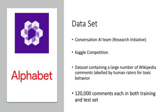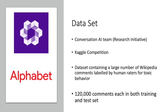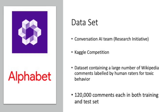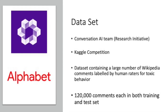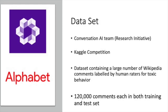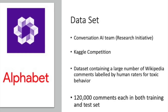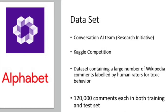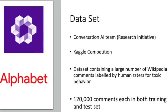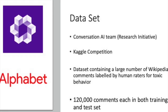For my dataset, I took data from a Kaggle competition which tried to do this prediction — predicting toxic comments from data. This was from the Conversation AI team, a research initiative with Alphabet companies like Google and Jigsaw. The dataset they created was around 120,000 comments in both a training and a test set, consisting of Wikipedia comments labeled by human raters for toxic behavior.